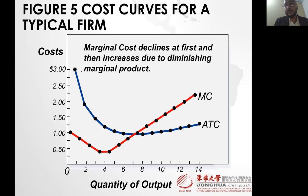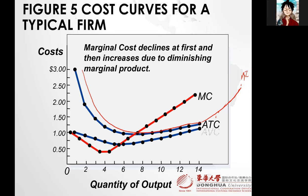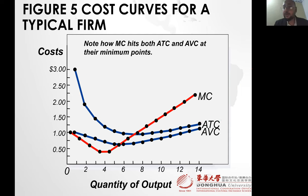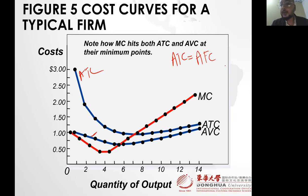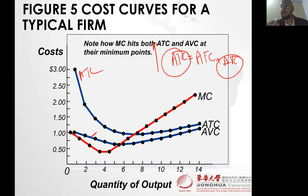Average total cost is like a U-shape — it first decreases and then starts rising. Average variable cost is always below the average total cost. Every total cost is above average variable cost because average total cost is the sum of average fixed cost plus average variable cost. So average total cost is always above the average variable cost.